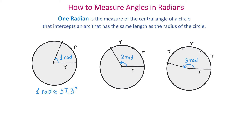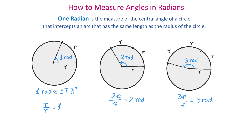Notice the following. In any of these circles, if we take the length of the arc and divide it by the radius, we will get the measure of the angle in radians. In the second circle, the length of the arc is 2r, so 2r divided by r gives two radians. In the third circle, the arc length is 3r, so 3r divided by r gives three radians. In the first circle, the arc length is r, and r divided by r gives 1 radian.